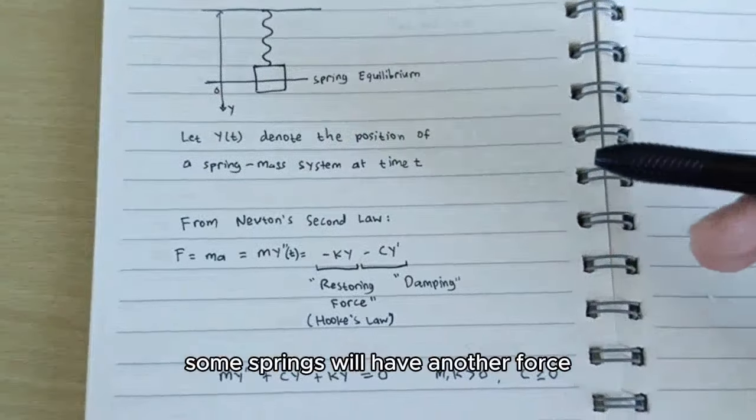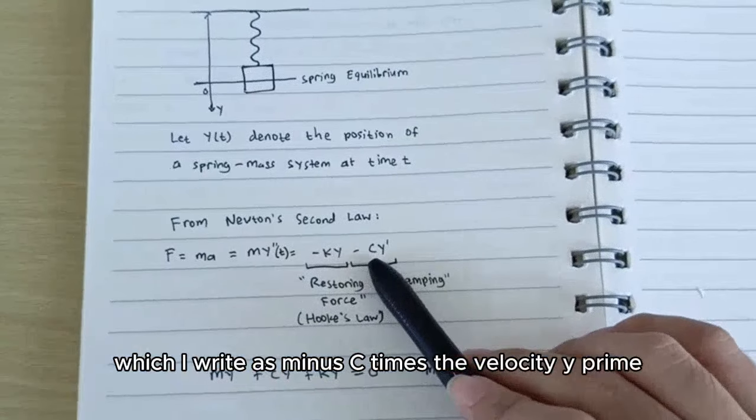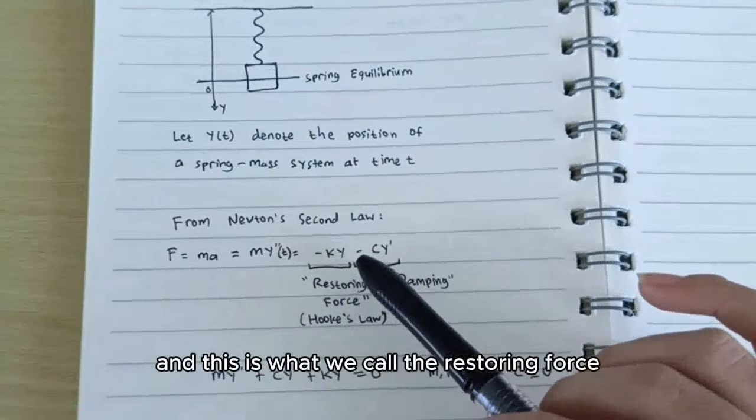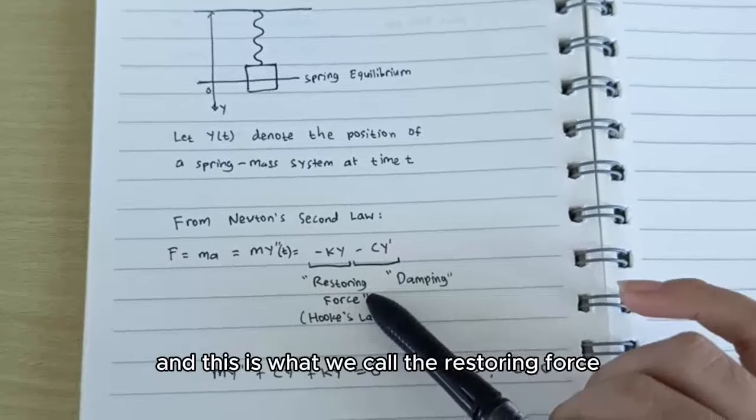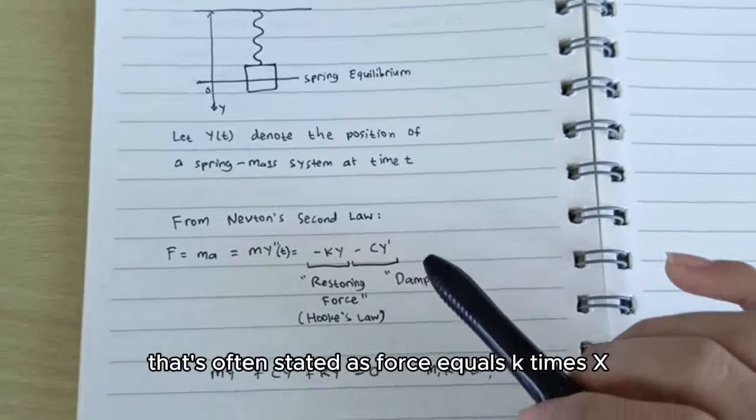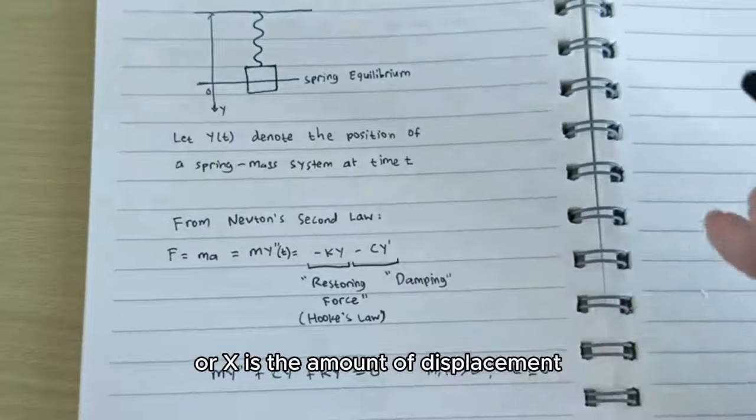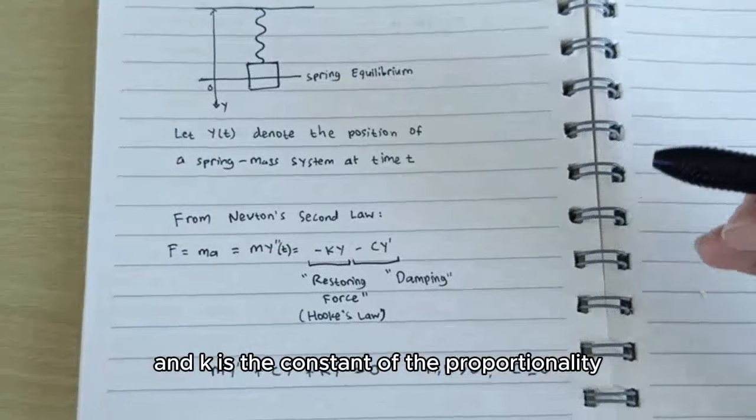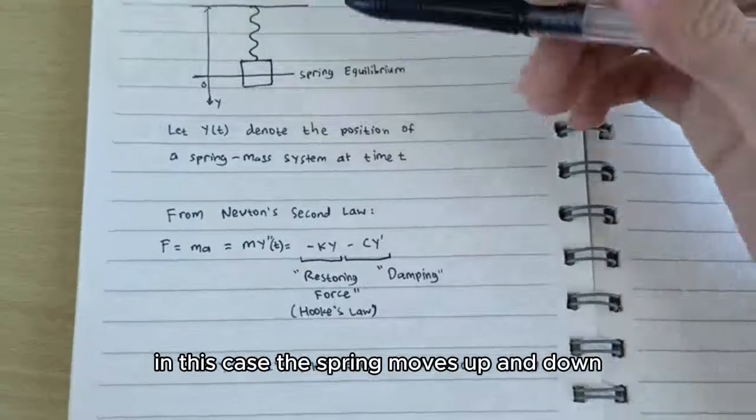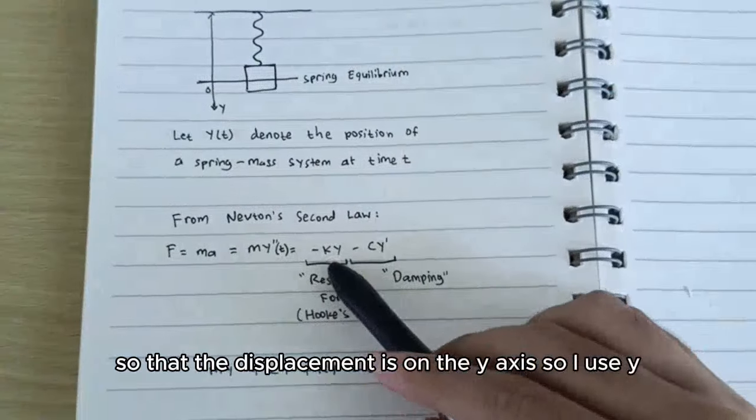Some springs will have another force which I write as minus c times the velocity y prime. The first one always happens, and this is what we call the restoring force. This is like Hooke's law that's often stated as force equals k times x, where x is the amount of displacement, and k is the constant of proportionality. In this case, the spring moves up and down so that its displacement is on the y-axis, so I use y.